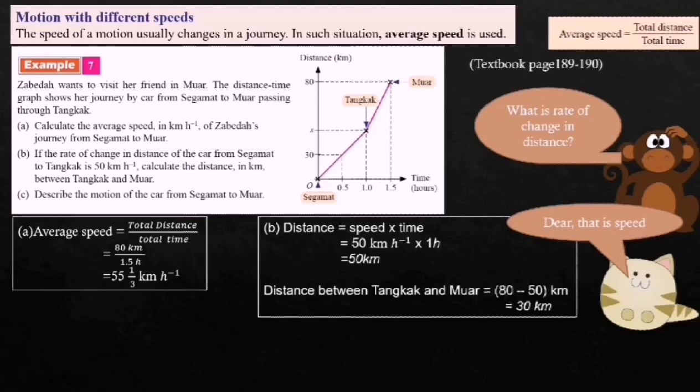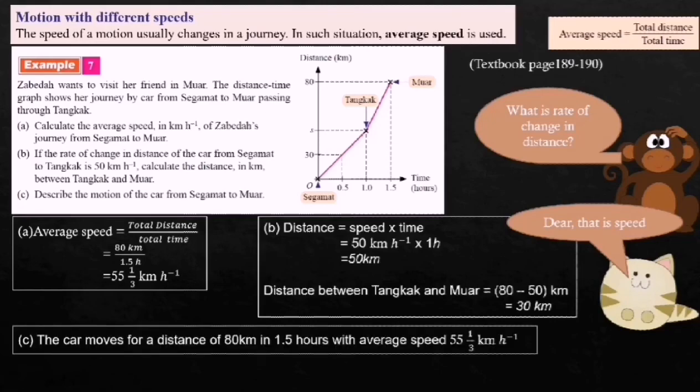Describe the motion of the car from Sekamat to Mua. The car moves a distance of 80 kilometers in 1.5 hours with an average speed of 53⅓ kilometers per hour. We use average speed here because the car travels at different speeds during the journey.